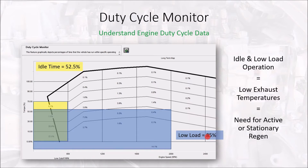Those lower exhaust system temperatures do not reduce the soot or raw fuel making its way into the after-treatment system. So that low load operation could induce after-treatment plugging, after-treatment system failures, and lack of regeneration.